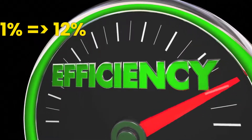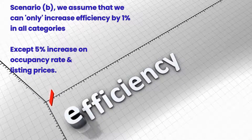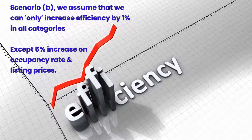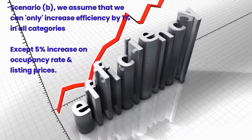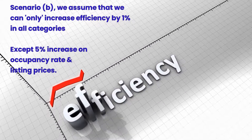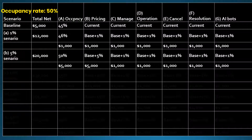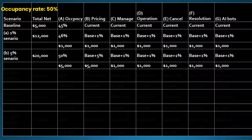This is a very big improvement — with just a one percent efficiency gain we improve profit 2.4 times to twelve percent. In Scenario B, we assume that we can only increase efficiency by one percent in all categories except occupancy rate and listing prices. These two categories typically have plenty of potential to improve. Generally speaking, occupancy rates are negatively affected by listing prices. However, there are ways to increase prices without affecting occupancy rates. With only a five percent increase in prices, we increase the net profit from five thousand dollars to twenty thousand dollars, or from five percent to twenty percent.